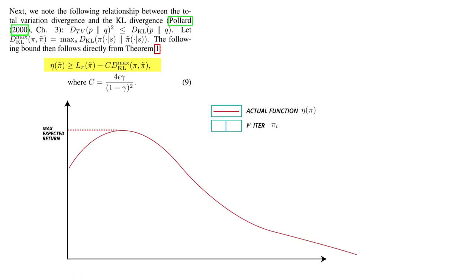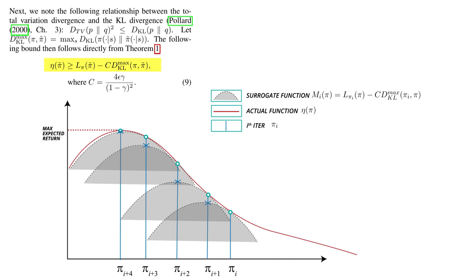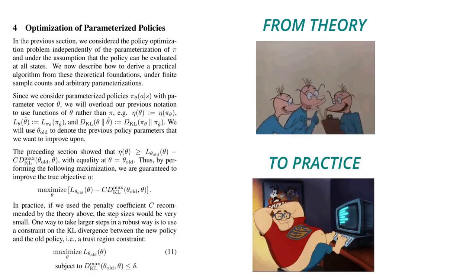If you look at the inequality here, the left side is the actual objective that we want to maximize, and the right side is the surrogate function which we can maximize. Maximizing the surrogate function for each iteration guarantees that the true objective will be non-decreasing. This kind of algorithm is called a minorization-maximization algorithm. In this case, L of pi-tilde minus a constant times the max-scale divergence between the old and new policy is the surrogate function, which minorizes the original objective eta of pi-tilde.